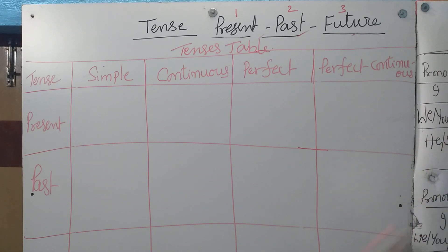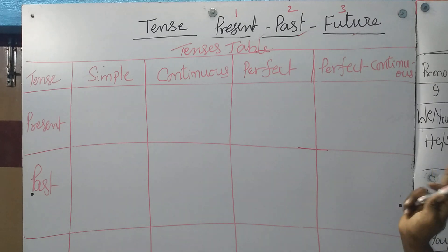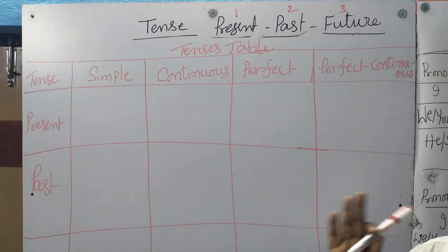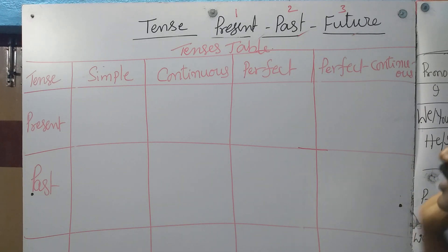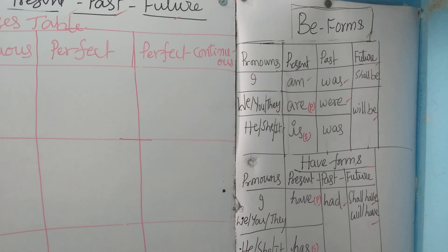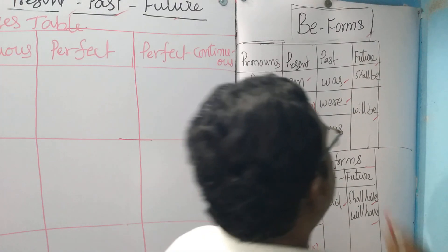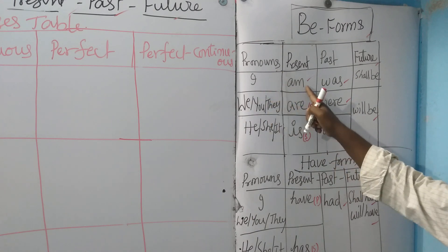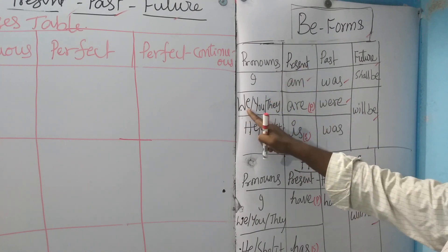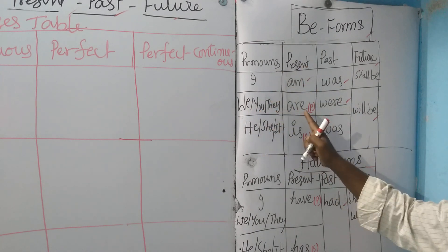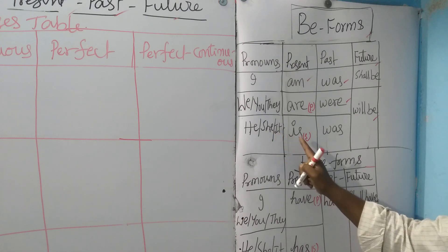Once again, my dear students, I already told you — B forms and have forms: you need commanding power on them. Let's see the B forms again. After 'I', we use 'am' — present tense. After 'we', 'you', 'they' — 'are'. After 'he', 'she', 'it' — 'is'.